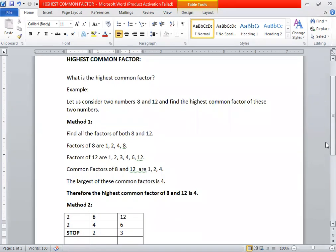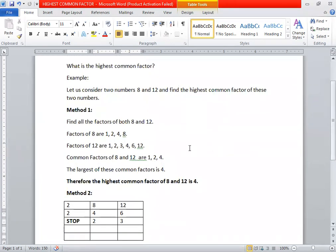Method 1: The first step, we find the factors of both these numbers. So the factors of 8 are 1, 2, 4, 8 and factors of 12 are 1, 2, 3, 4, 6, and 12. Then we find common factors. The common factors of 8 and 12 are 1, 2, 4.